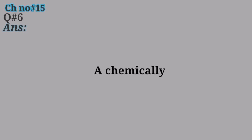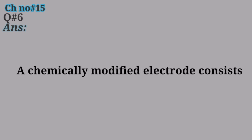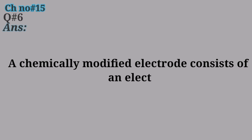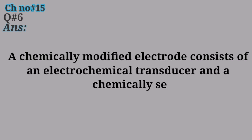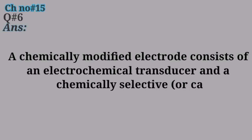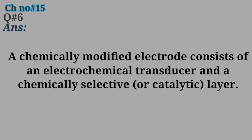Question No. 6: What is a chemically modified electrode? A chemically modified electrode is defined as an electrode consisting of an electrochemical transducer and a chemically selective or catalytic layer.